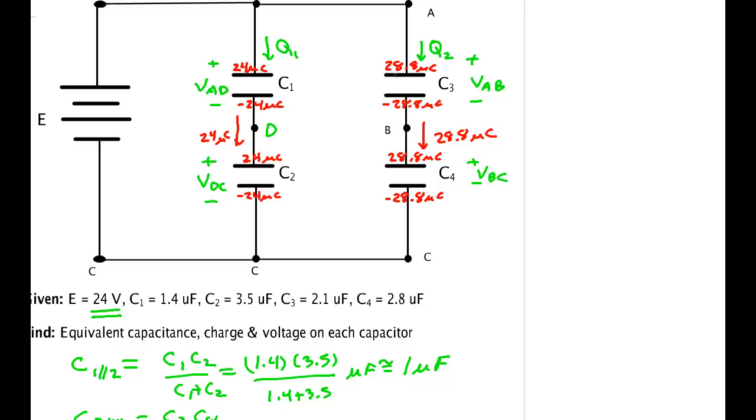V_AB equals 28.8 microcoulombs divided by C3, which was 2.1 microfarads. We get 13.7 volts, so this is 13.7 volts.